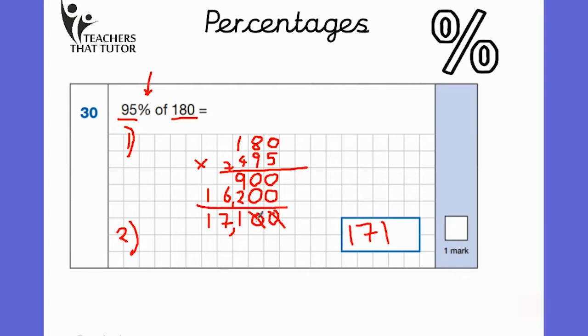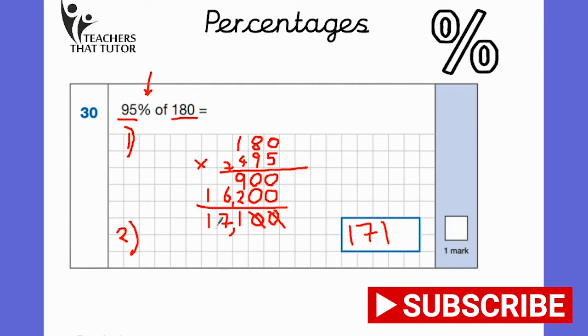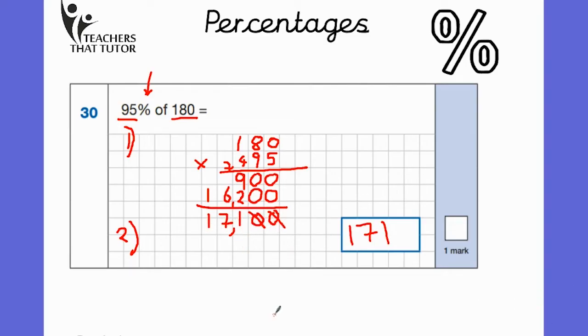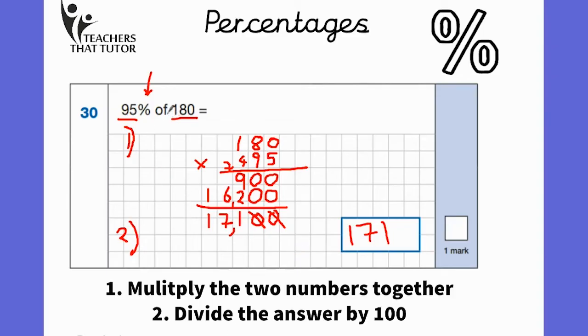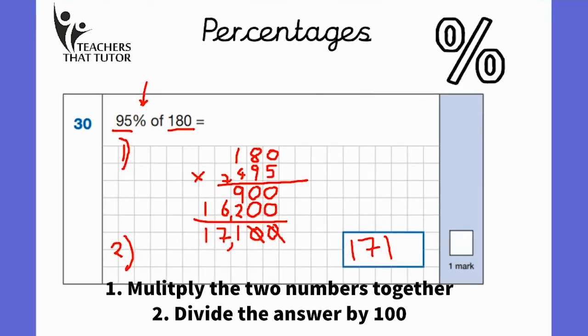Just bear in mind, if one of these is not a zero, you would still have to divide the whole number by 100 by moving the numbers two jumps to the right. So two steps: multiply the two numbers together using long multiplication, and then divide the answer by 100 to get your final answer.